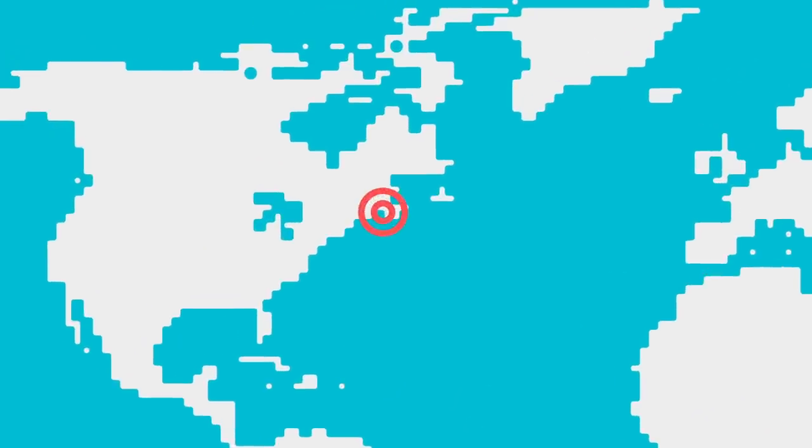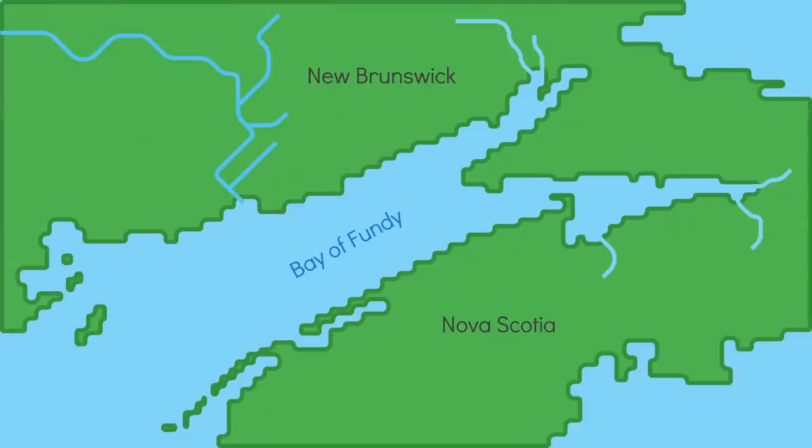The Bay of Fundy, on the other hand, is great at generating huge tides. It's shaped like a funnel and gets gradually narrower and shallower towards the shore. This amplifies the tides. In addition, the natural back and forth sloshing of the waters in the bay coincides almost perfectly with the tides. Further amplifying them.